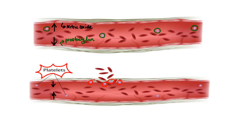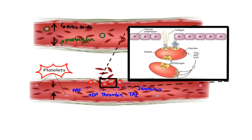Next, these activated, differently shaped platelets begin to release granules containing chemical mediators such as ADP, thrombin, thromboxane A2, serotonin, and platelet activating factor, which attract and activate even more platelets that come to the site of injury. The final step involves activation of the glycoprotein 2b3a receptors, which bind circulating fibrinogen. The fibrinogen simultaneously binds to these receptors on two separate platelets, thus cross-linking platelets to form aggregates.